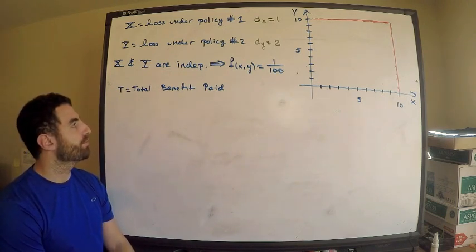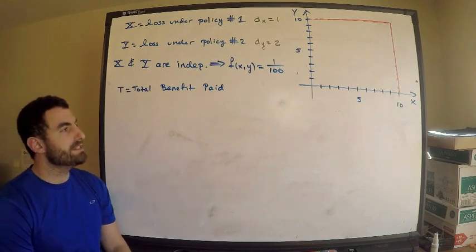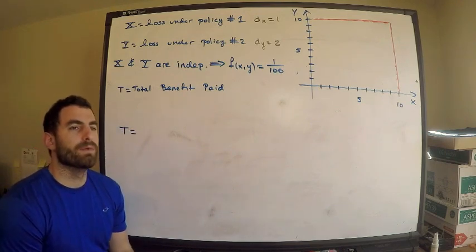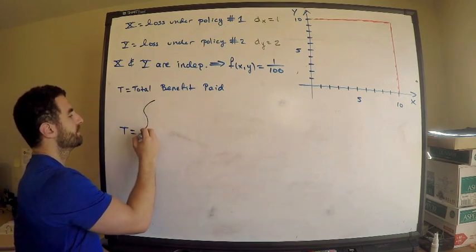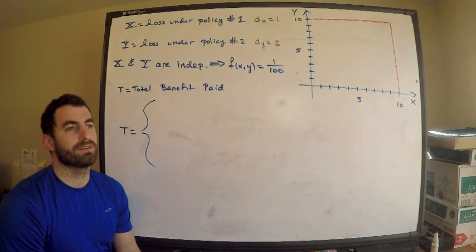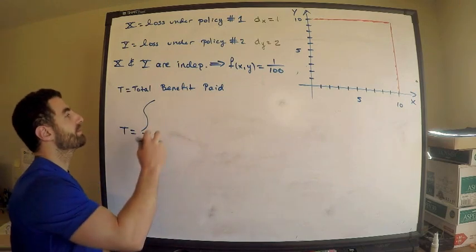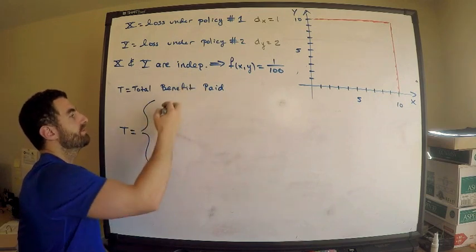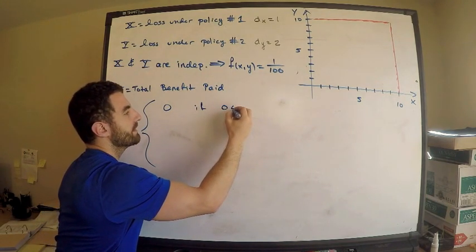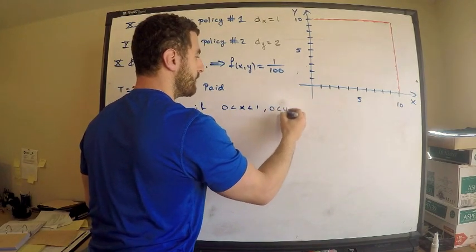I have another random variable T, the total benefit paid, and I need to give a representation for T — this is one of the tricky parts. T is a piecewise defined random variable. When could the total benefit be zero? There's exactly one loss under each policy, so if policy one's loss is less than one and policy two's loss is less than two, the total benefit is zero. That is: 0 < x < 1 and 0 < y < 2.